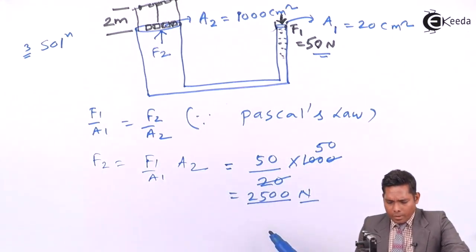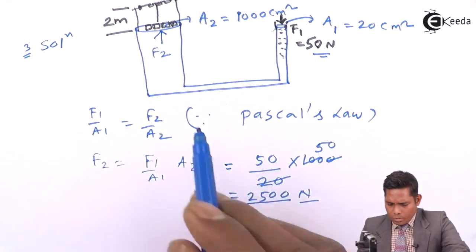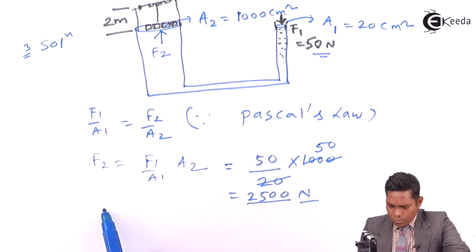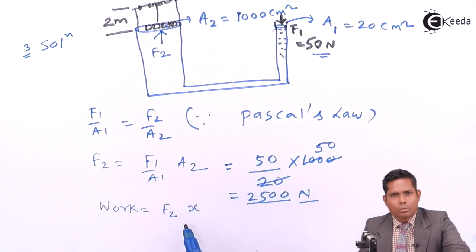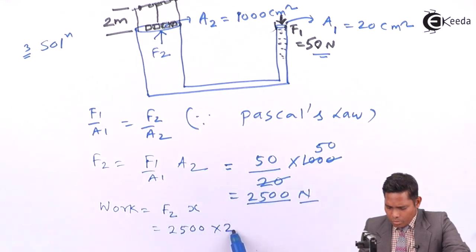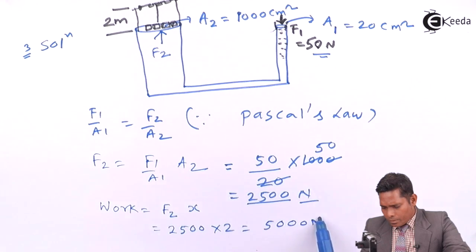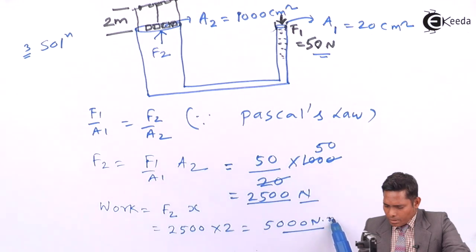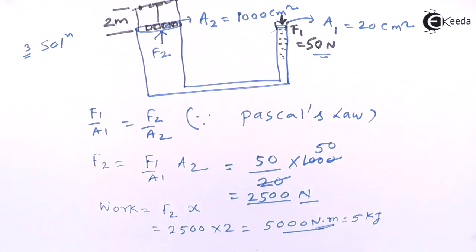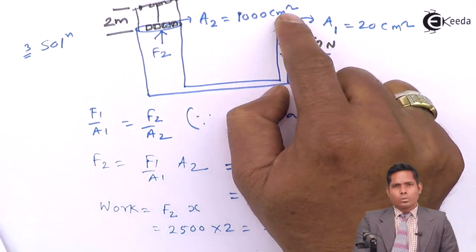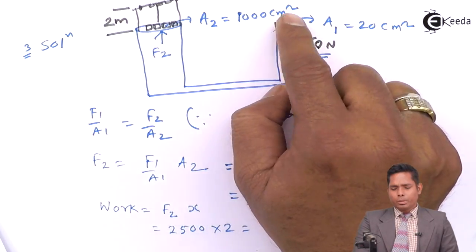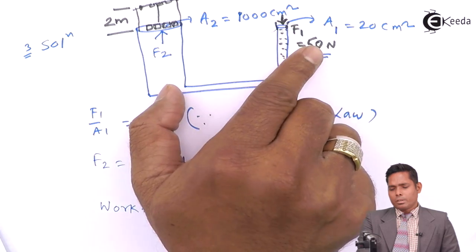The weight is found to be 2500 newtons and this moves up by 2 meters. Work done equals force times displacement, so work done equals 2500 newtons times 2 meters, which equals 5000 joules, or 5 kilojoules. So 5 kilojoules of work is done when the input piston is given a force of 50 newtons.